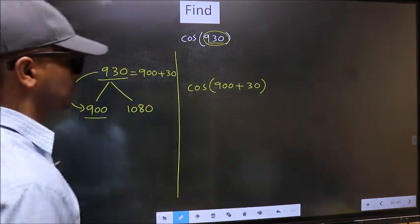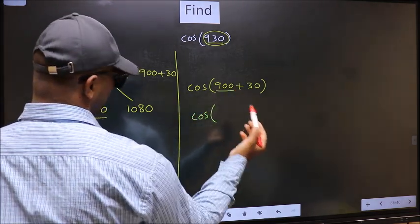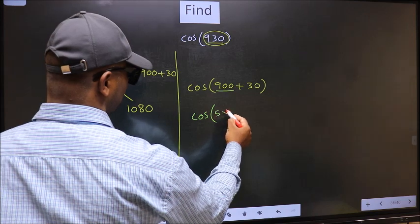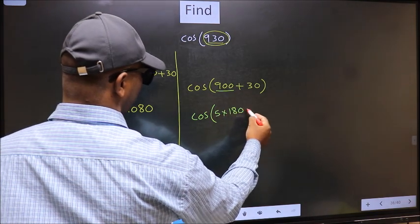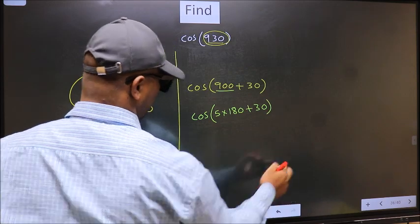Next, cos. In place of 900, now we should write 5 into 180 plus 30.